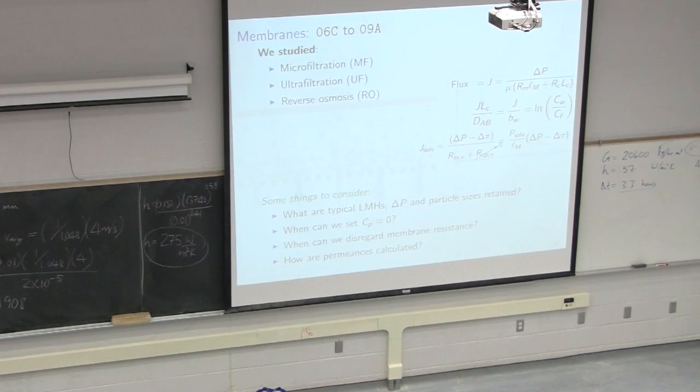After that we moved to membranes and we focused on three membranes. So here, week six, seven, eight, and nine we focused on membranes. Three types were considered: microfiltration, ultrafiltration, and RO reverse osmosis. This was probably the first time in the course where we introduced flux as an important concept of driving force over resistance. And in each one of these three membranes, all that changes is either our driving force, so pressure is our driving force in these first two equations, and our resistance changes.